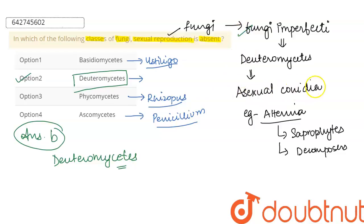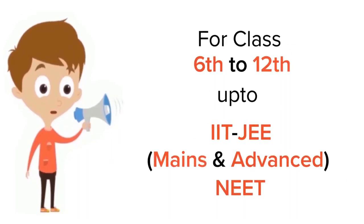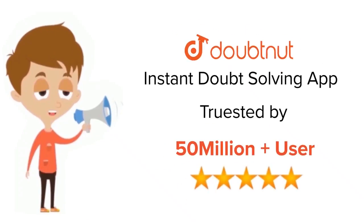So my answer is answer B, because deuteromycetes are also called fungi imperfecti and they are the ones which undergo asexual reproduction through conidia. I hope it's clear, thank you.